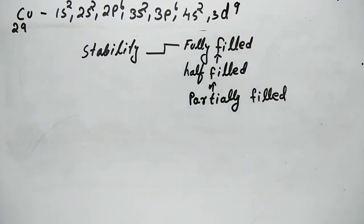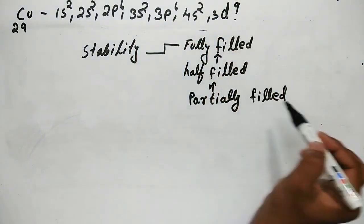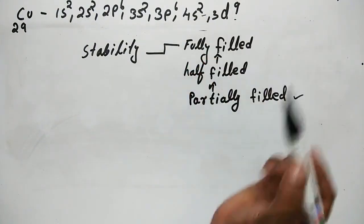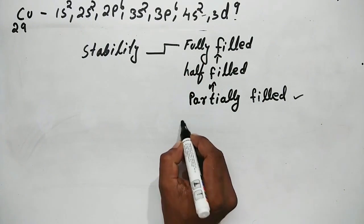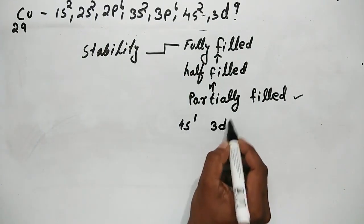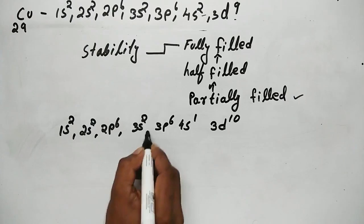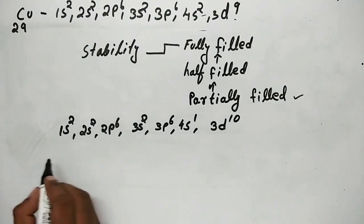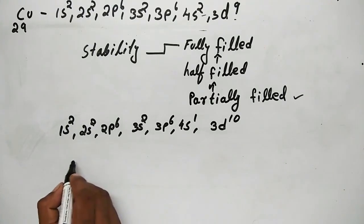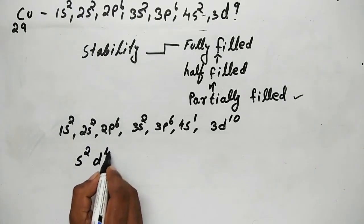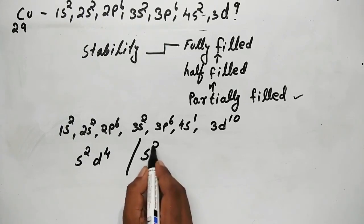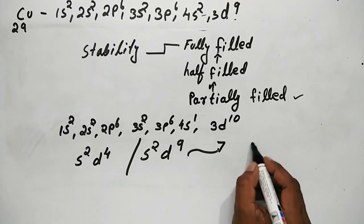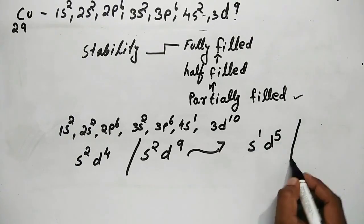A half-filled or fully-filled subshell is more stable. Similarly for copper, atomic number 29, the electronic configuration is 1s², 2s², 2p⁶, 3s², 3p⁶, 4s¹, 3d¹⁰ — rather than 4s², 3d⁹ — because a fully-filled d subshell is more stable.